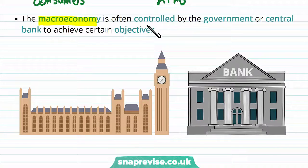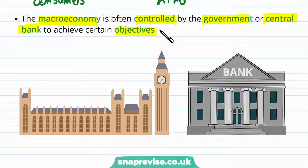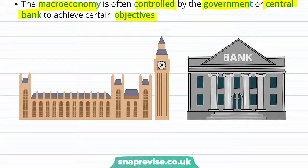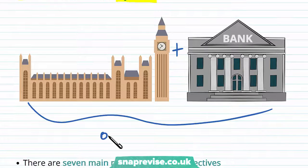The macroeconomy is often controlled by our final economic agent, which is the government. We can think about the central bank as well, as a combination of the two in terms of the management of the macroeconomy. These two parties or public bodies are going to work together to achieve certain objectives that will be desirable for an economy.